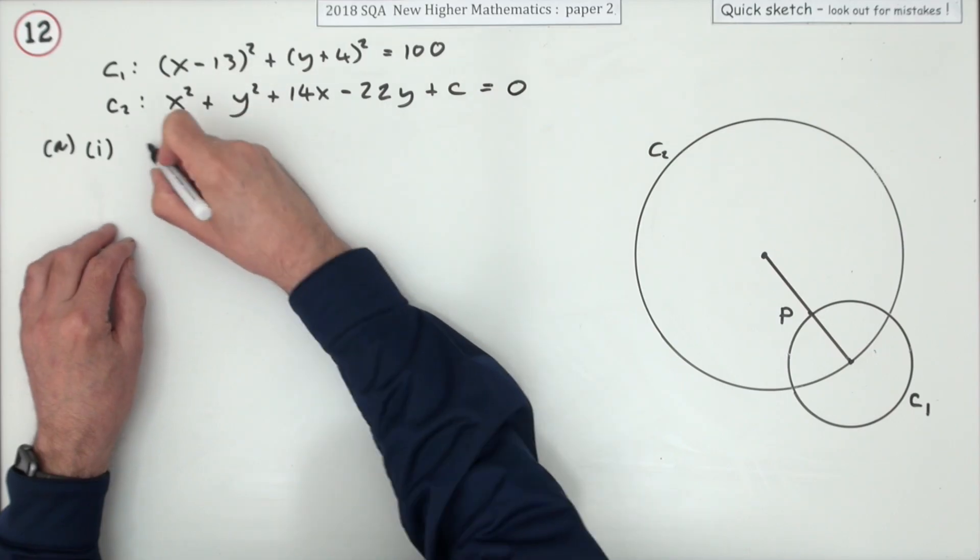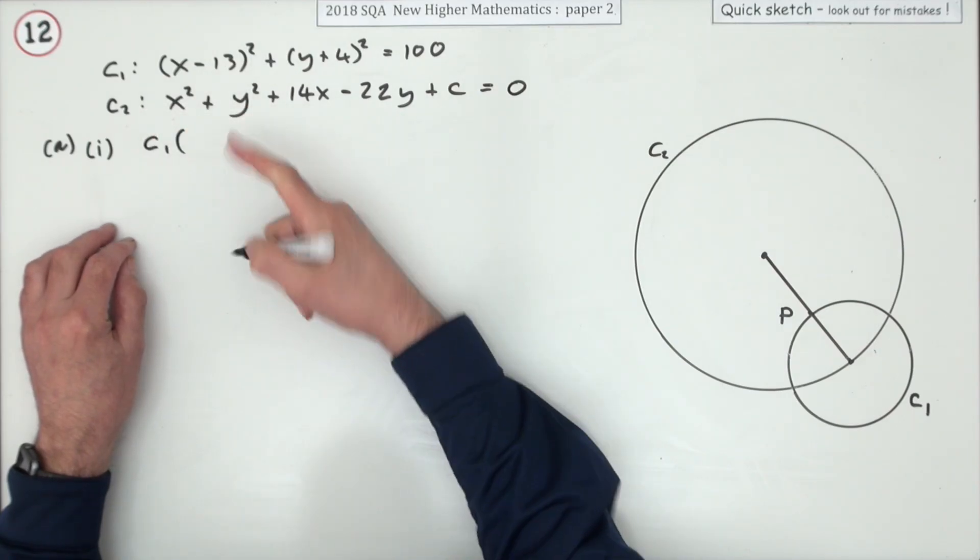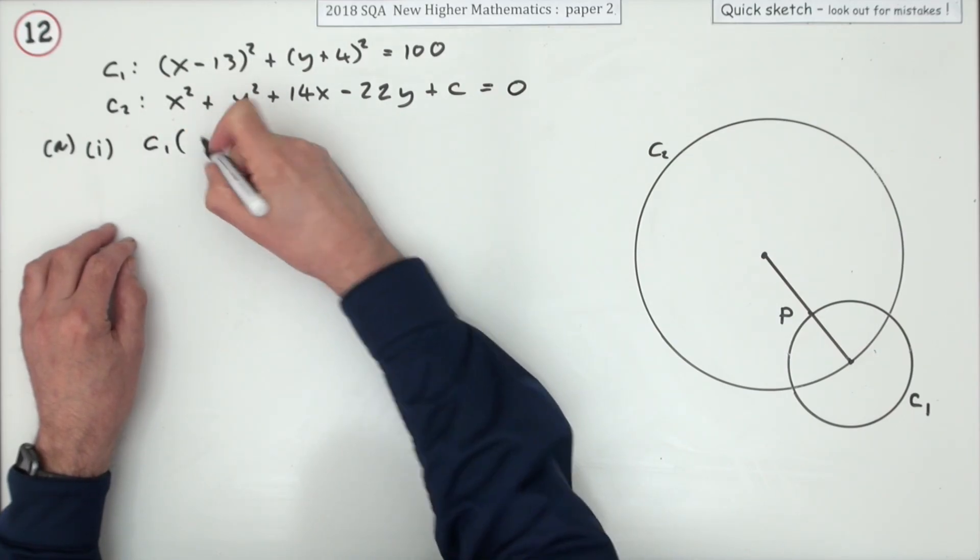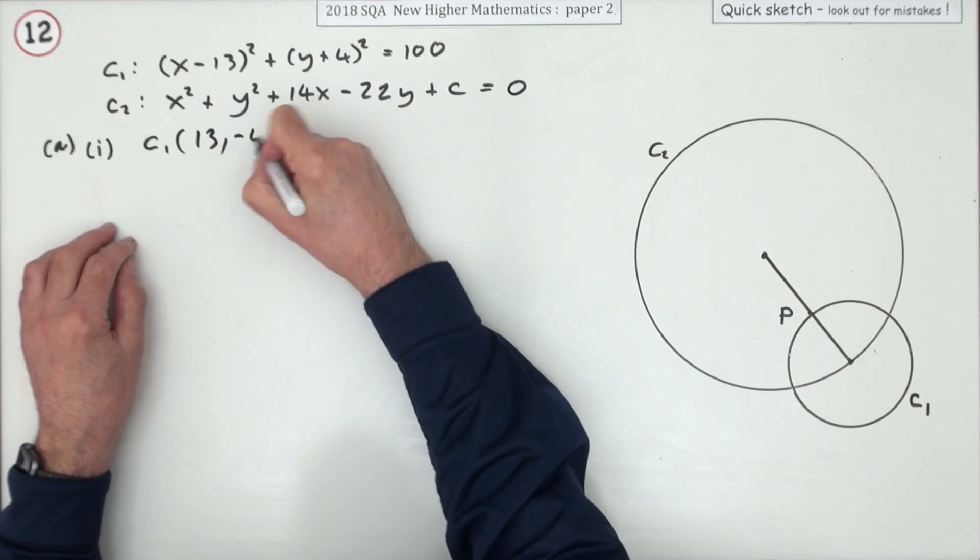I'll just borrow their names for their centers. For the center of C1, it's whatever's been subtracted, so that will be 13 and negative 4.